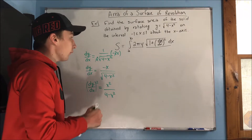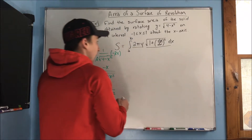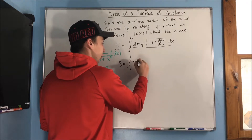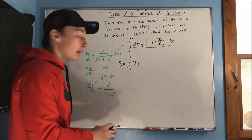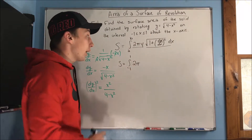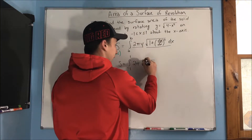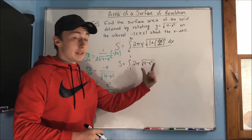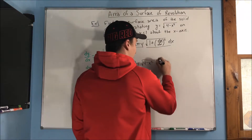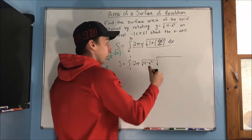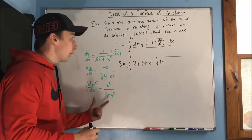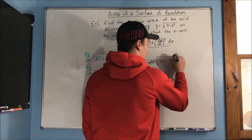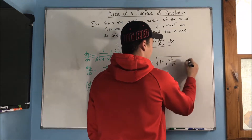Now the surface area equals the integral from negative 1 to 1 of 2π times y — which is the square root of (4 minus x²) since we're integrating with respect to x — times the square root of 1 plus x² over (4 minus x²) dx.